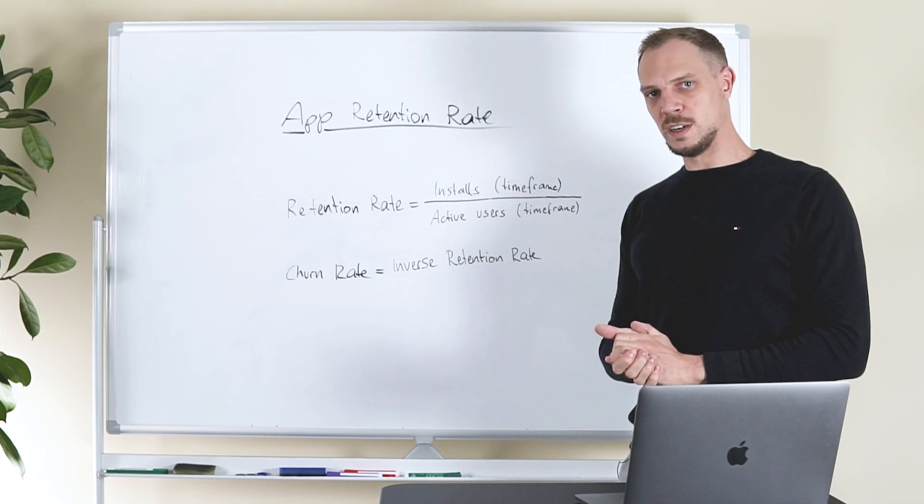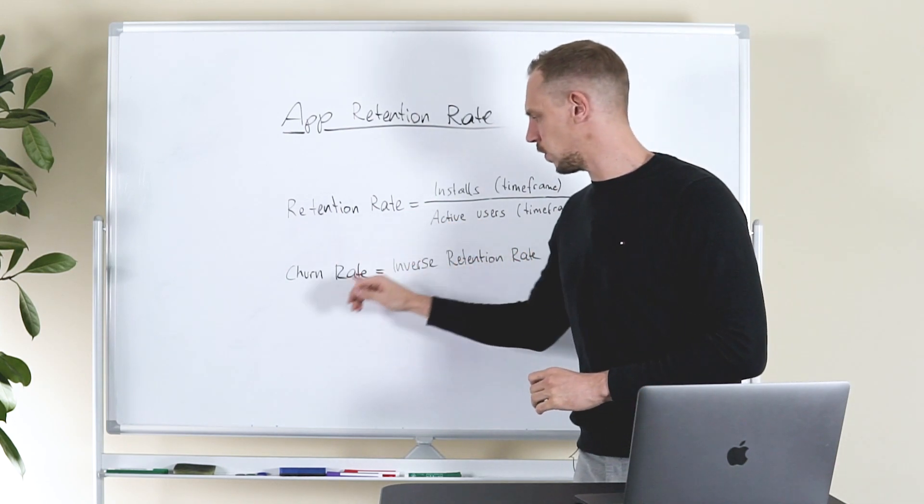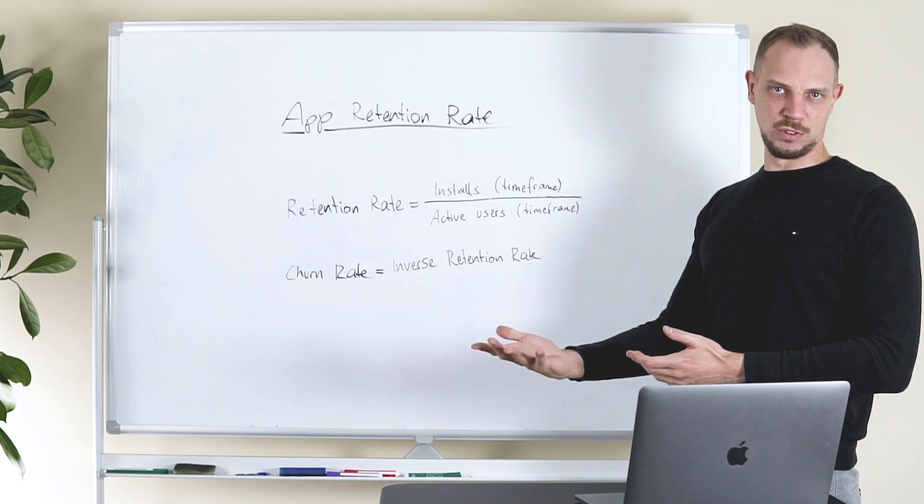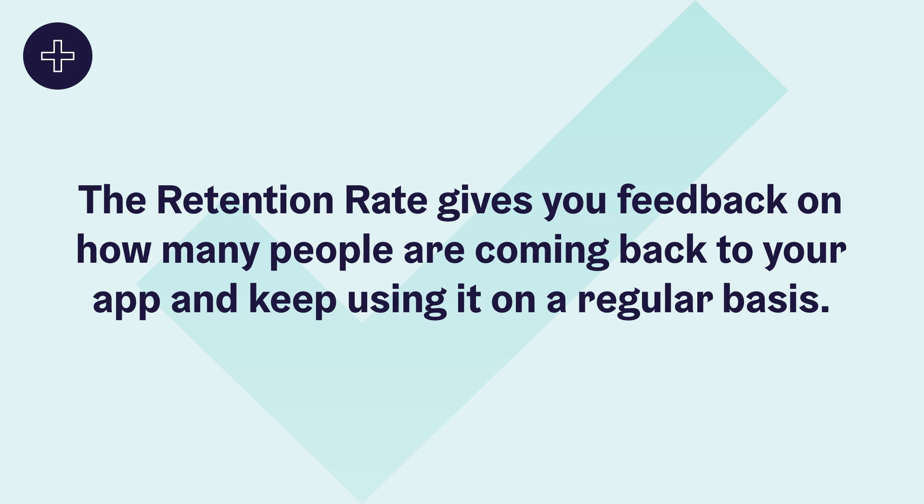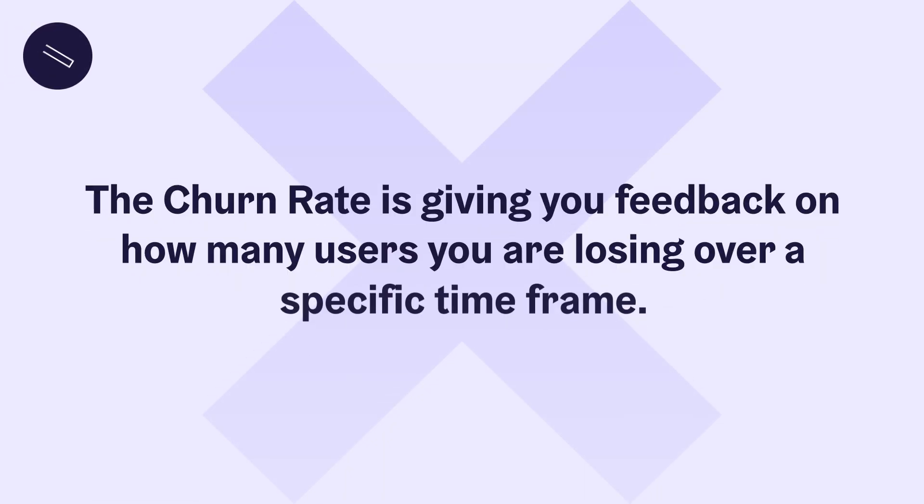On the other hand, when talking about the retention rate, it is also important to understand that there is a churn rate. The churn rate is quite the opposite of the retention rate. The retention rate itself gives you feedback on how many people are coming back to your app and keep using it on a regular basis. On the other hand, the churn rate is giving you feedback of how many users are you losing over a specific time frame.